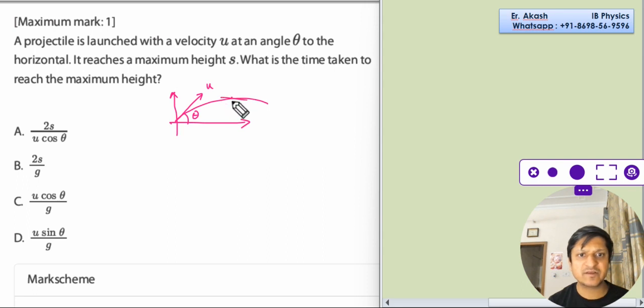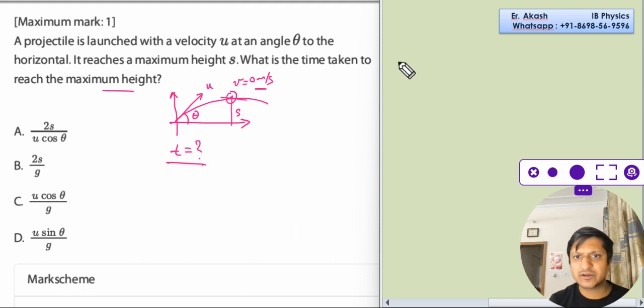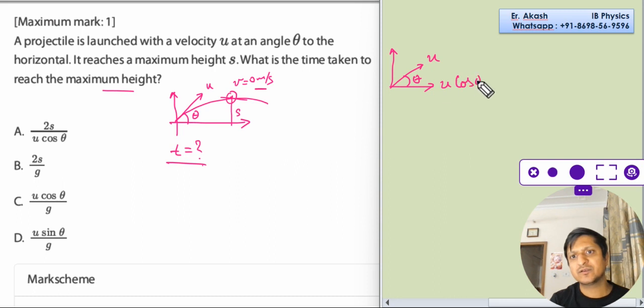It reaches the maximum height S. What is the time taken to reach the height? So we have to calculate the time taken to reach this point. At this point, the velocity is 0 meters per second. We will write all the given information and we need to break this u velocity, the initial velocity, into components. This is u cos theta and this is u sine theta.